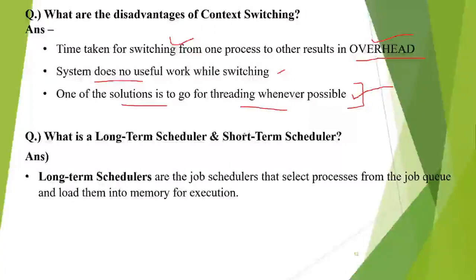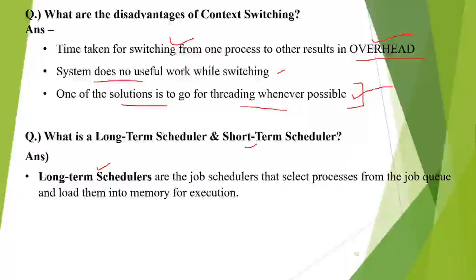Next is the concept of scheduling. Scheduling is a phenomenon where we decide which process will get the CPU and when. Various schedulers are used in the system: one is the long-term scheduler, another is the short-term scheduler, and there is also a medium-term scheduler, though we generally discuss the first two. Long-term schedulers are termed job schedulers — they select processes from the job queue and load them into memory for execution.